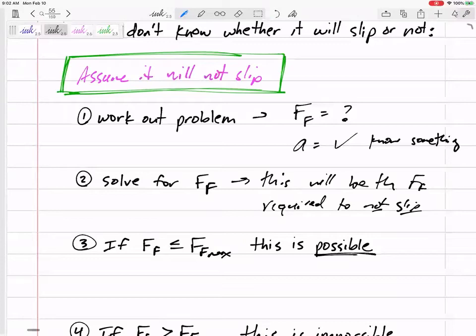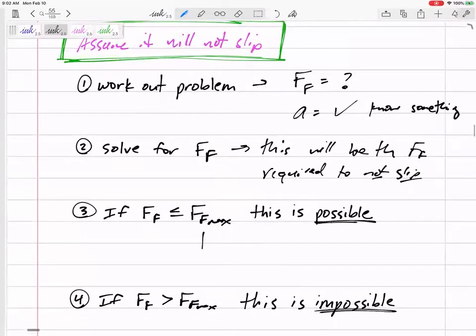Then ask yourself: is this force of friction possible? You know that the maximum it can get up to is μ_s times N. So if it's less than the maximum, that's perfectly possible.